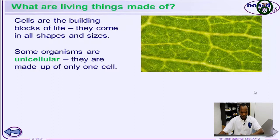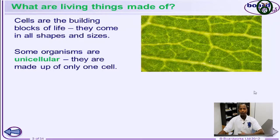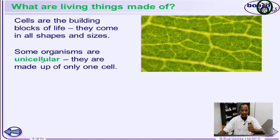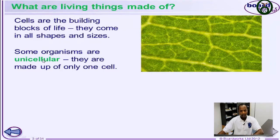For unicellular organisms, we say they are made up of only one type of cell. When you say unicellular organisms, you're talking about organisms made up of only one type of cell — for example, bacteria, which we'll look at thereafter.